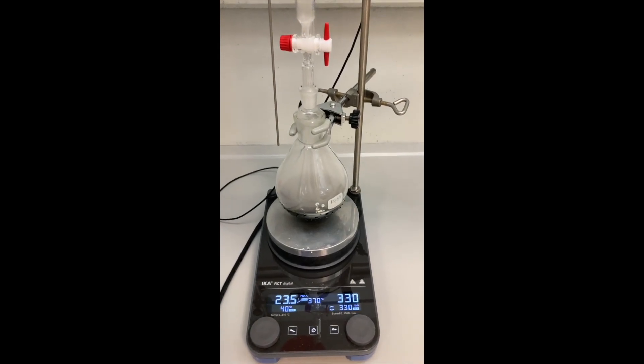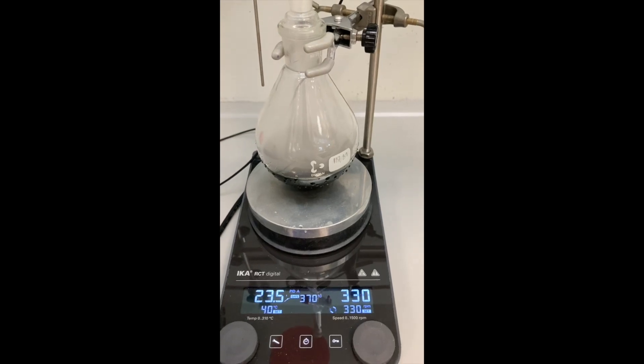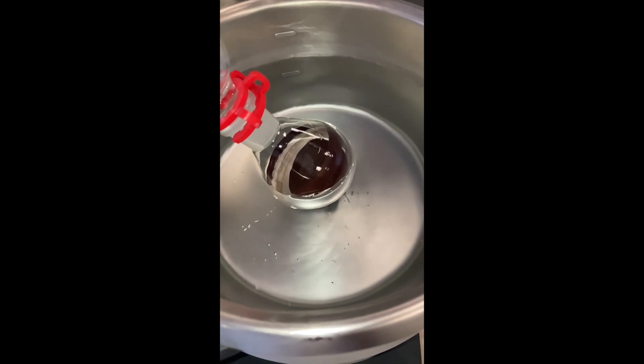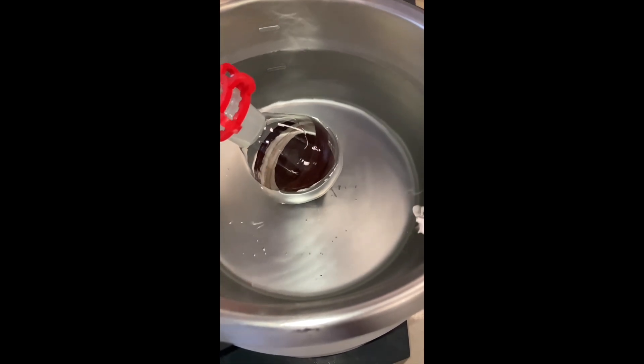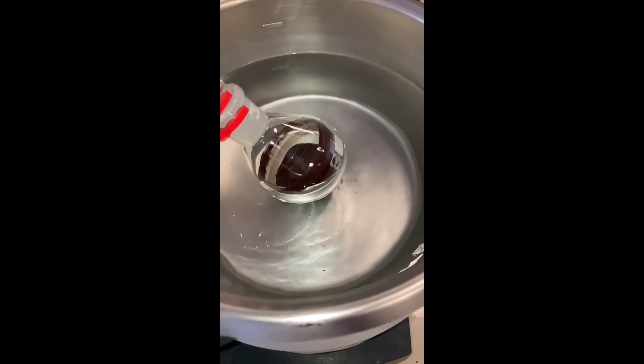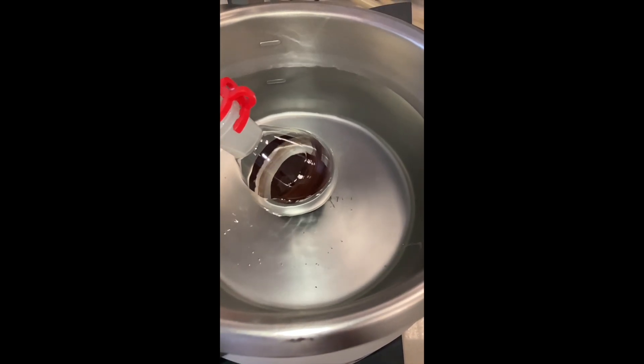After two hours, I added water and separated the layers. After drying the organic phase with sodium sulfate and filtering off the drying agent, I added silica gel and evaporated the solvent to get the dry loading for my automated flash column chromatography.